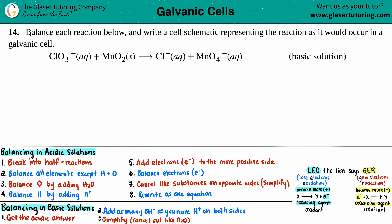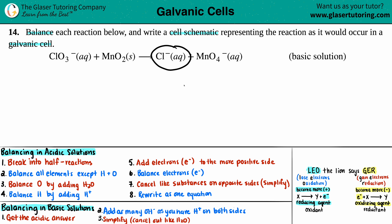Problem 14: balance each reaction below and write a cell schematic representing the reaction as it would occur in a galvanic cell. We have ClO₃⁻ (aq) + MnO₂ (s) yielding Cl⁻ (aq) + MnO₄⁻ (aq), and we have to balance it in a basic solution.